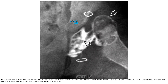An intraoperative arthrogram shows contrast outlining the dysplastic, mostly unossified left femoral head. Note that the acetabular roof is quite shallow. The femur is dislocated superiorly with a dysplastic and shallow joint space. This child requires an osteotomy.